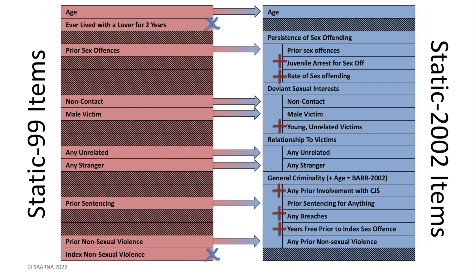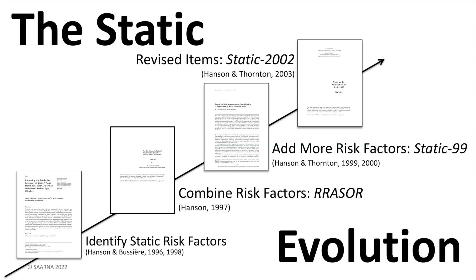The new scale, Static-2002, was similar to Static-99 in prediction of sexual recidivism. However, Static-2002 was a better predictor of violent recidivism and performed more consistently across different settings.